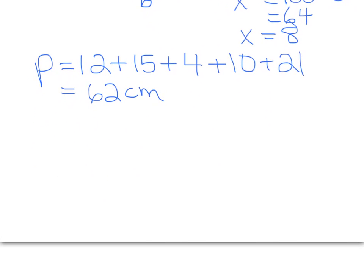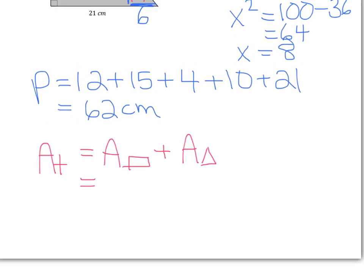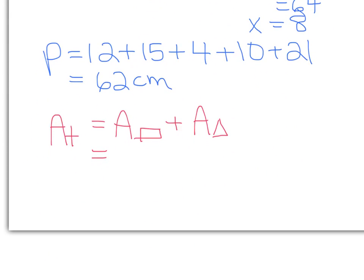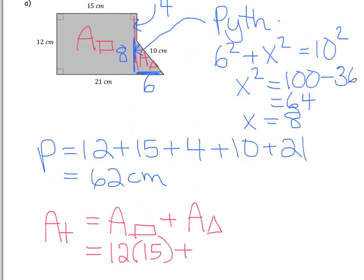And obviously here when we start to do this calculation, let's do that in red for area. Then as we start to write it out, our area total, we'll use t for total, is going to be the area of our rectangle plus the area of our triangle. So nice and simple for the area of the rectangle. We of course know that the rectangle is length times width. So in that case, it's 12 times 15. So you just write 12 times 15.